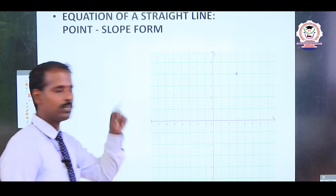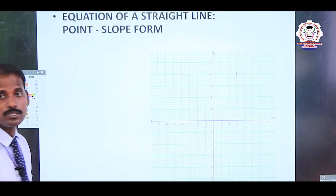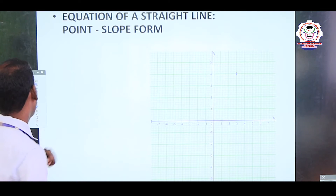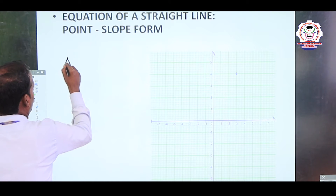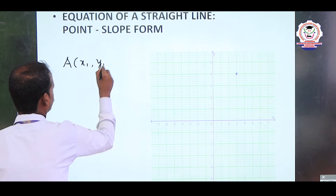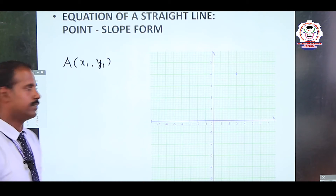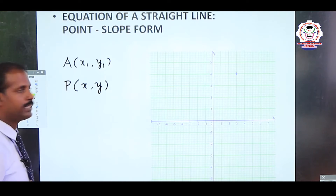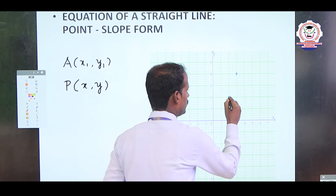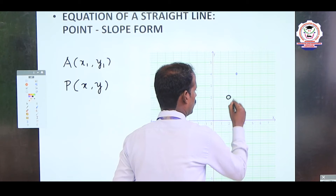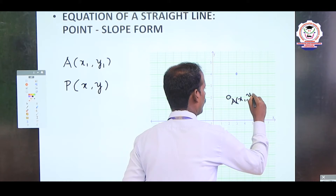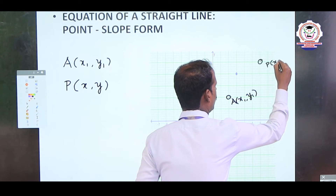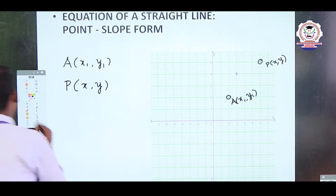Here we have one point and one slope. How to find the equation of the straight line given one point and one slope? Let us consider point A as (x1, y1) and another point P as (x, y). These two points joining together form a line.